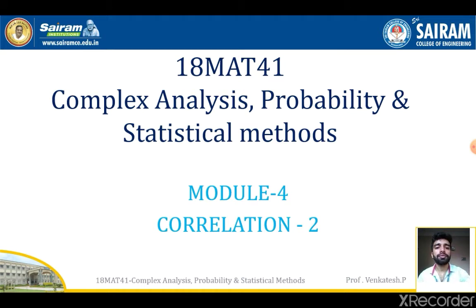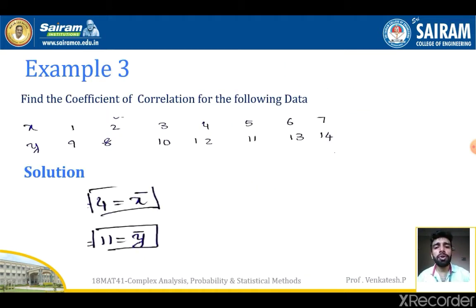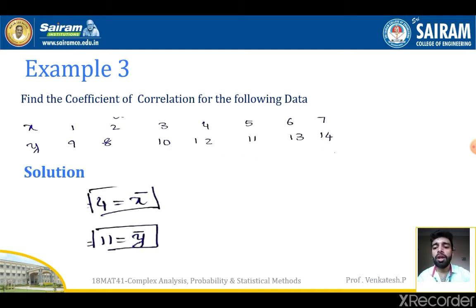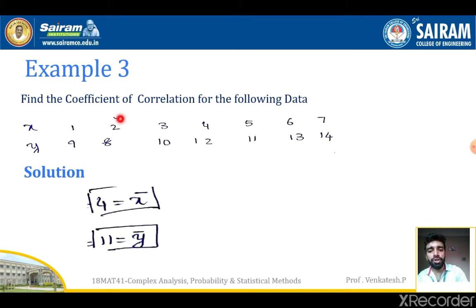Example number 3: Find the coefficient of correlation for the following data. X is given as 1, 2, 3, 4, 5, 6, 7 and Y is given as 9, 8, 10, 12, 11, 13, 4. To find R, the formula is: R = Σ(XY) / sqrt(ΣX² · ΣY²), where capital X = x − x̄ and capital Y = y − ȳ. Here n = 7, and x̄ = Σx / n.